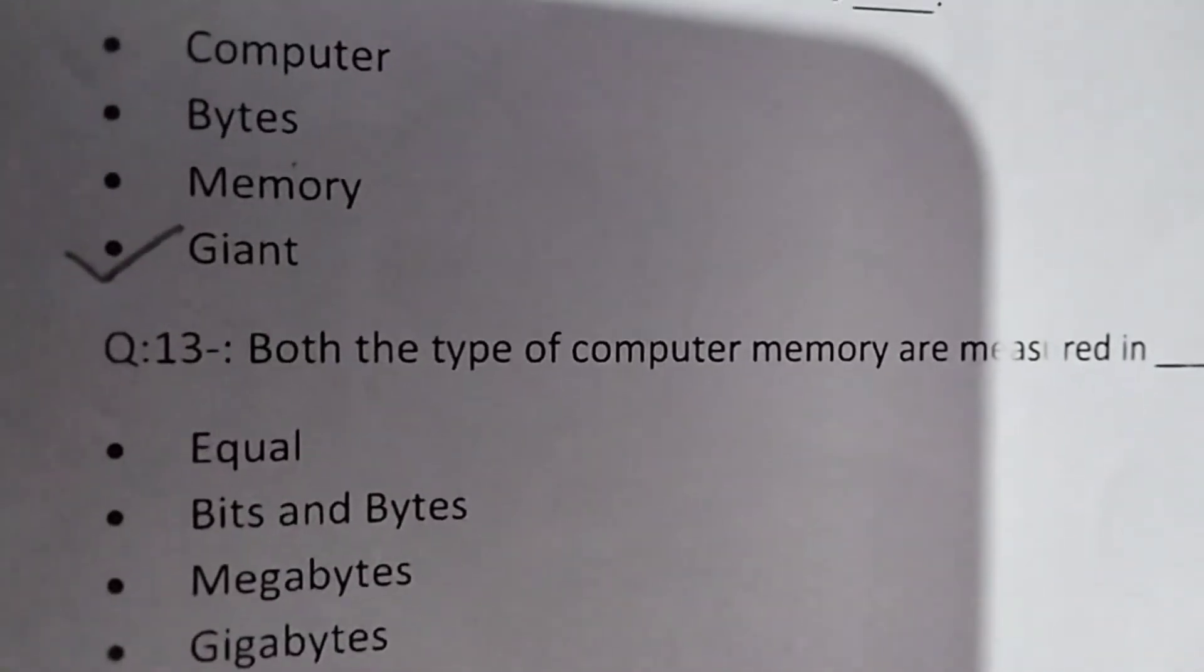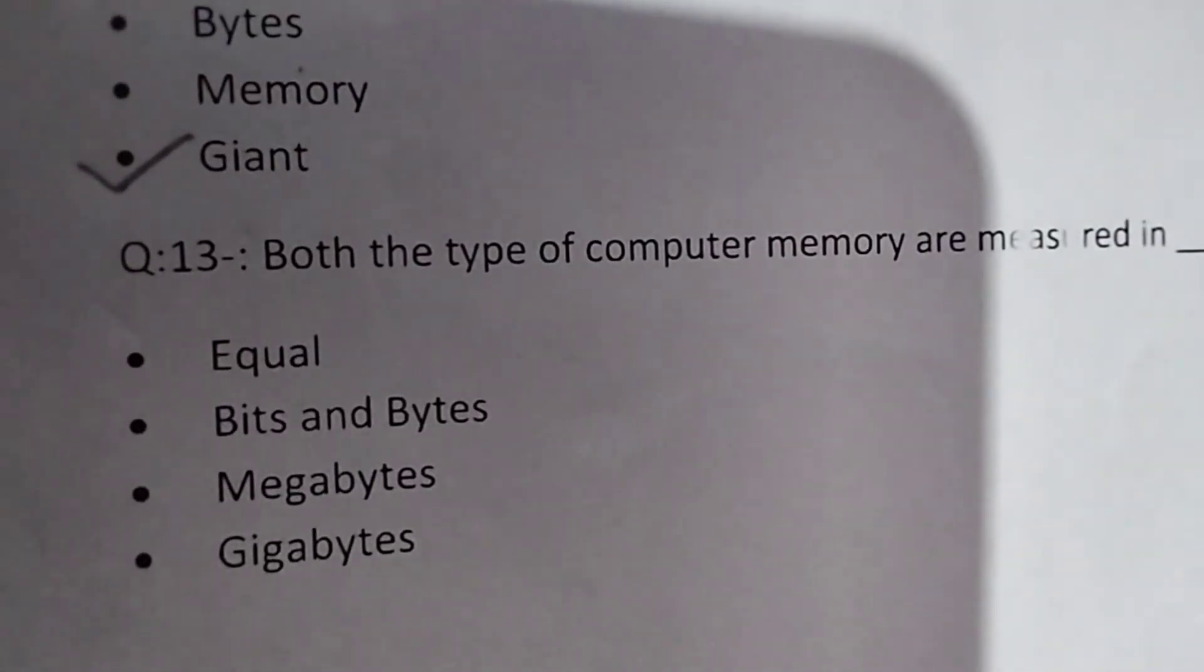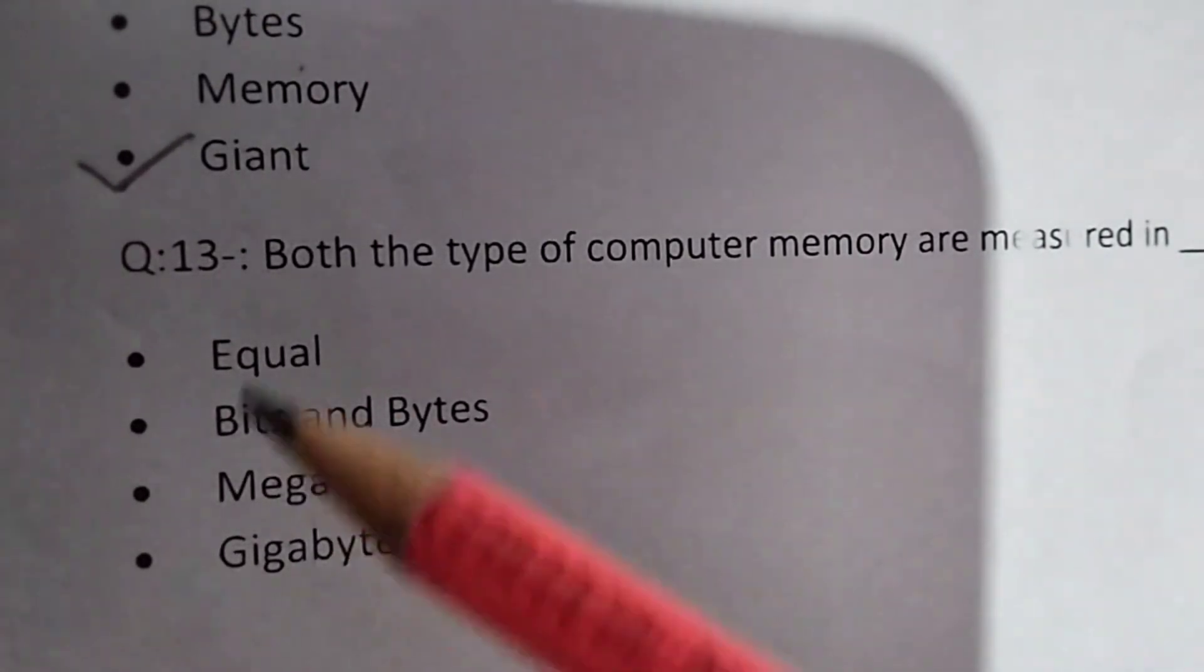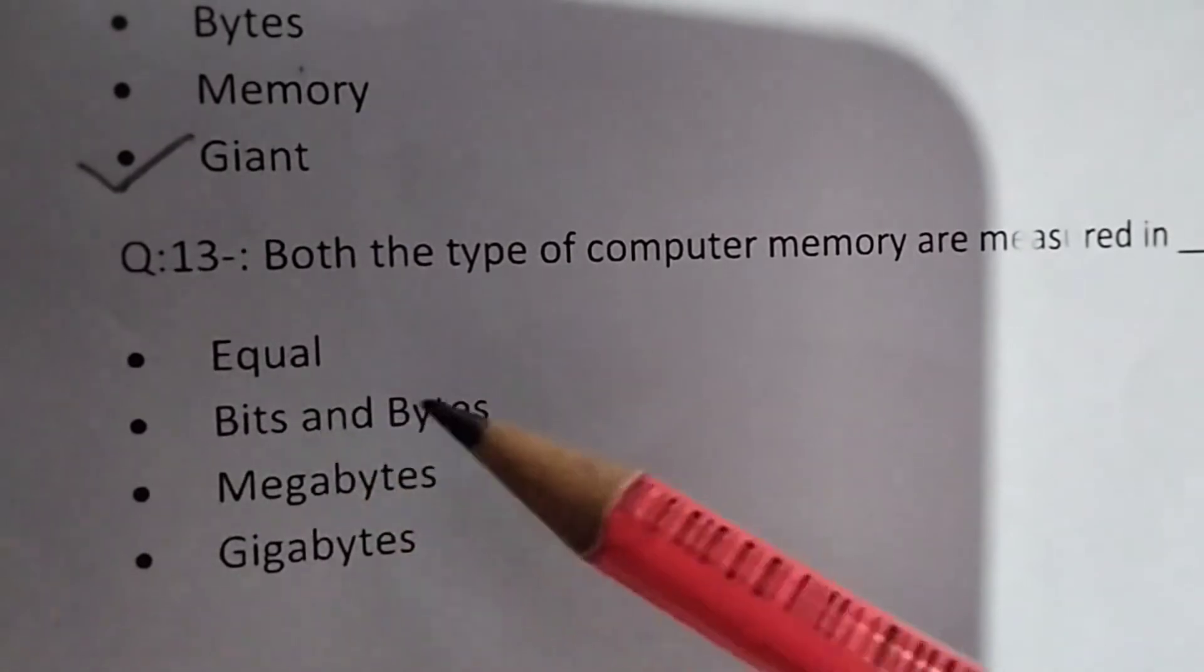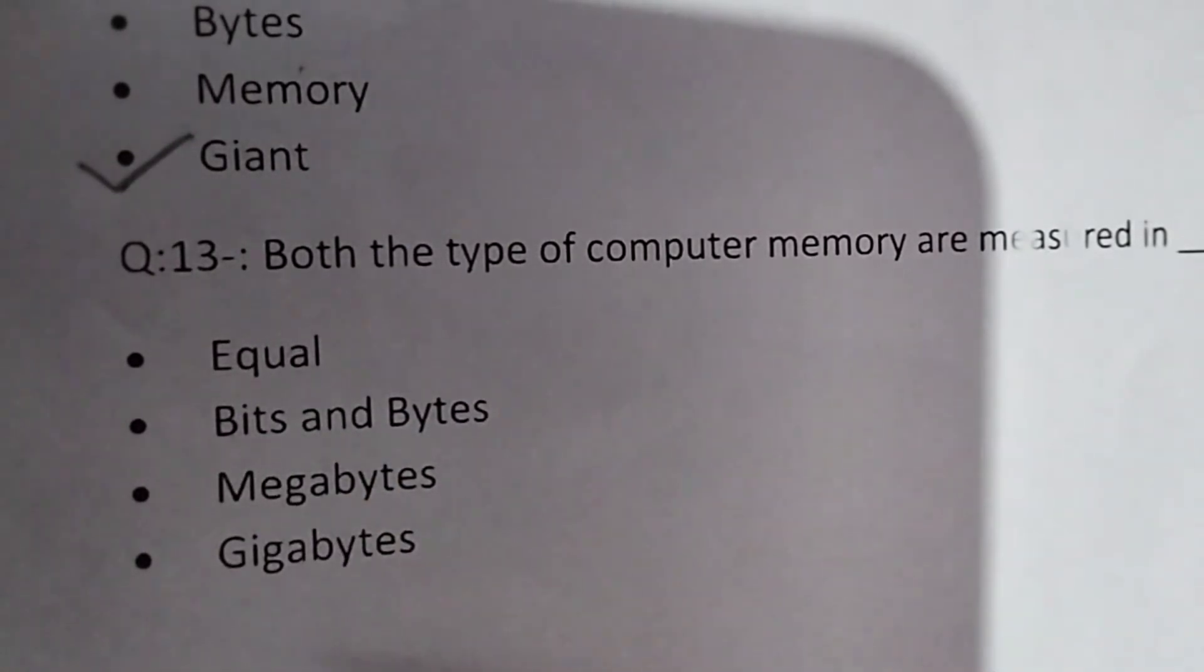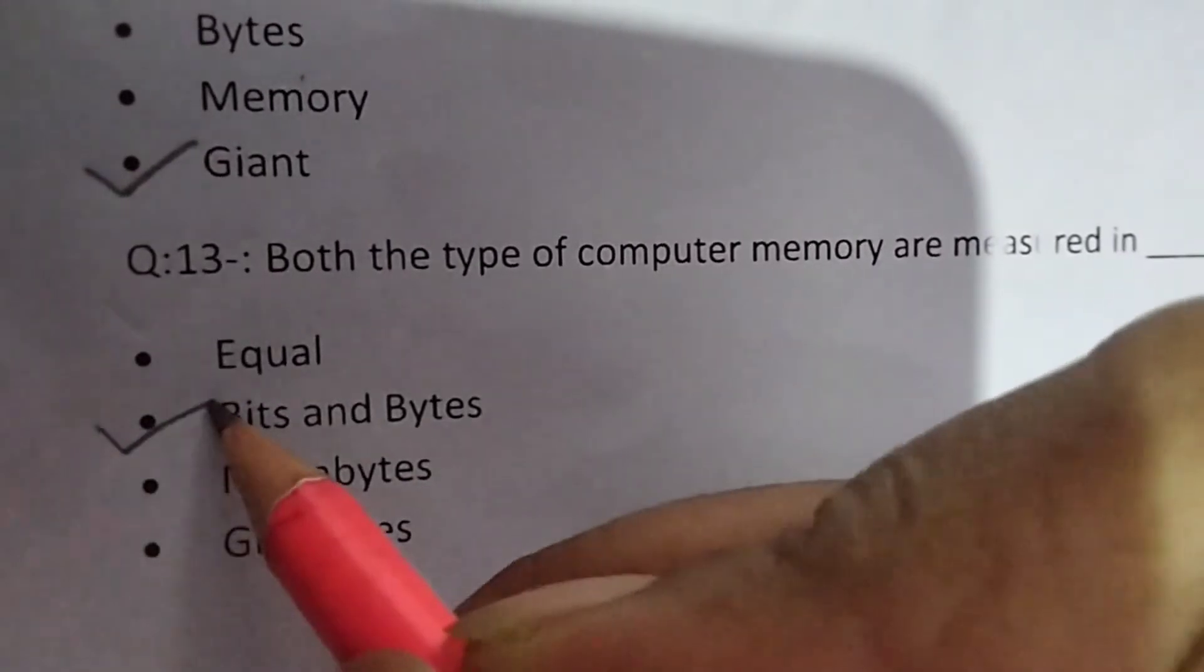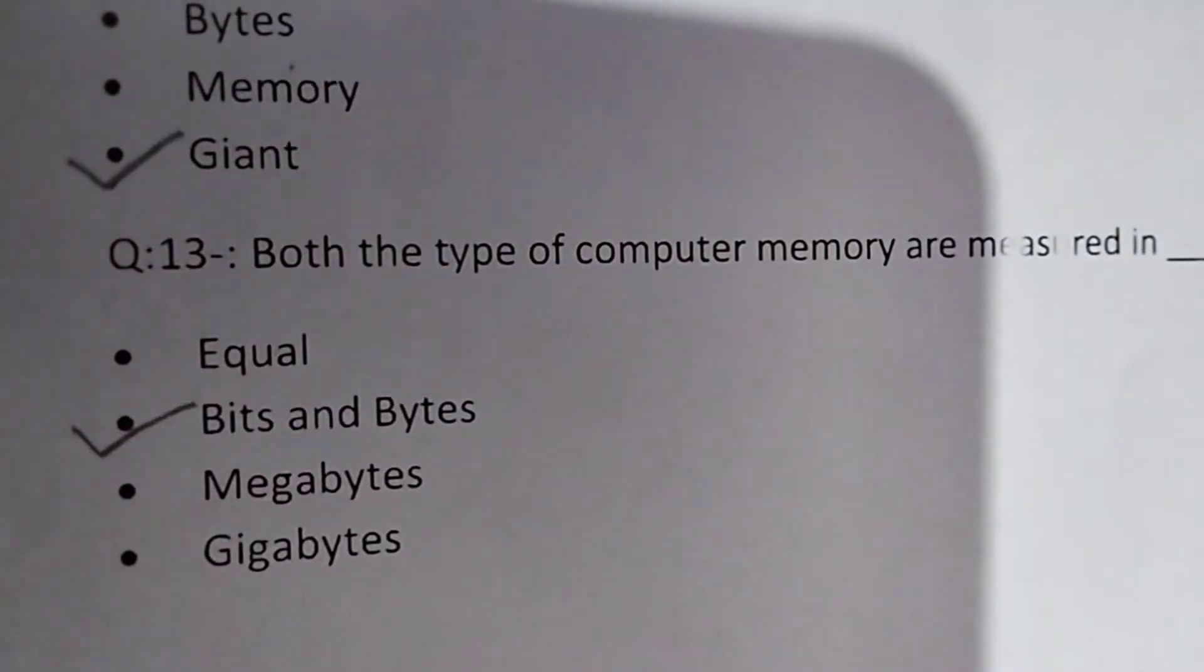Both the type of computer memory are measured in blank. Both memories are measured in what? Equal, bits and bytes, megabyte or gigabyte. So answer is bits and bytes.